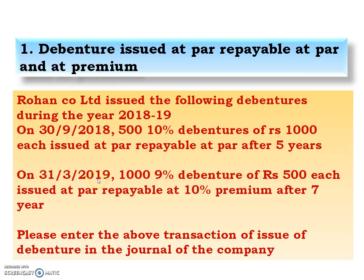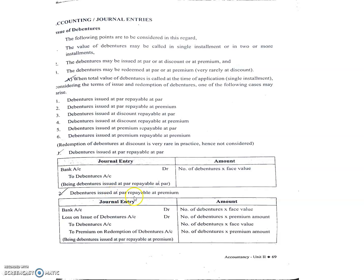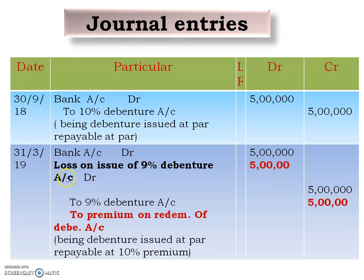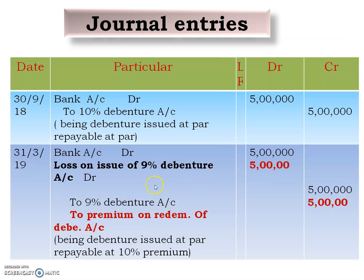For the second case, on 31st March 2019, debentures are issued at par and repayable at premium. The journal entry format is: Bank Account debit, Loss on Issue of Debenture Account debit, to Debenture Account, to Premium on Redemption of Debenture Account. So the entry is: Bank Account debit, Loss on Issue of 9% Debenture Account debit, to 9% Debenture Account, to Premium on Redemption of Debenture Account.